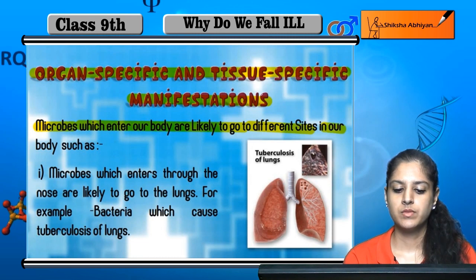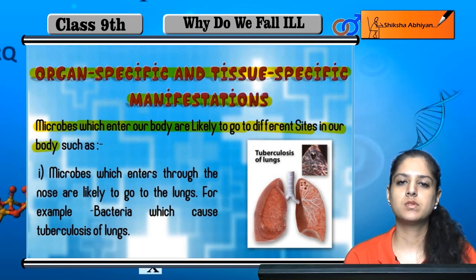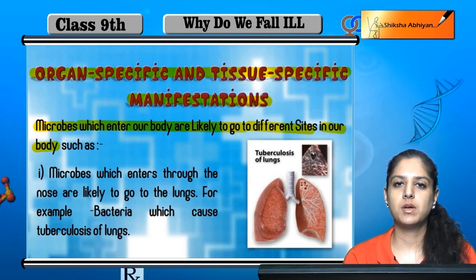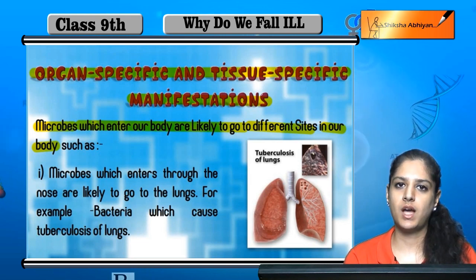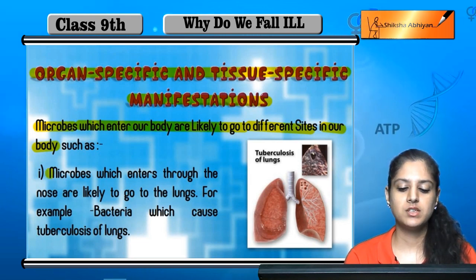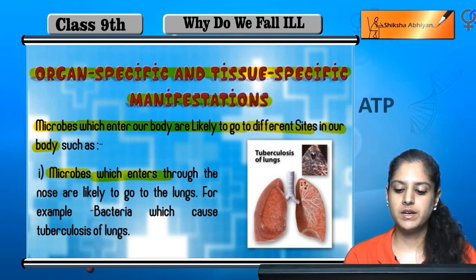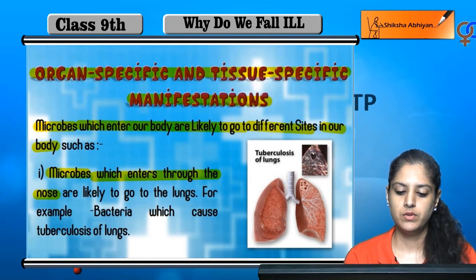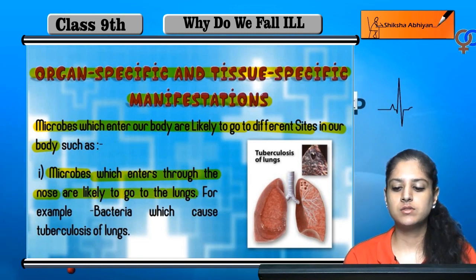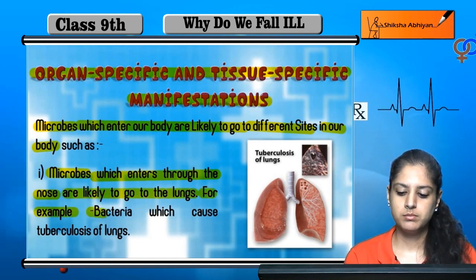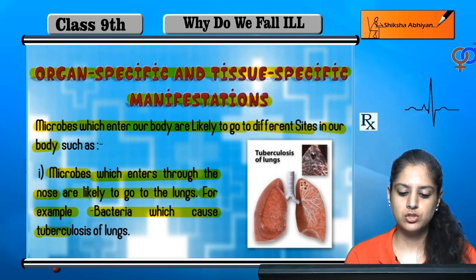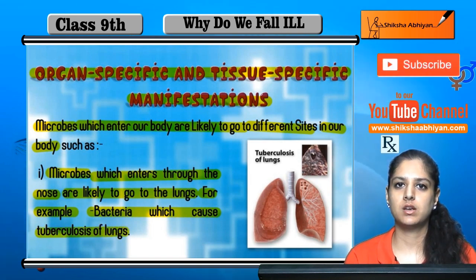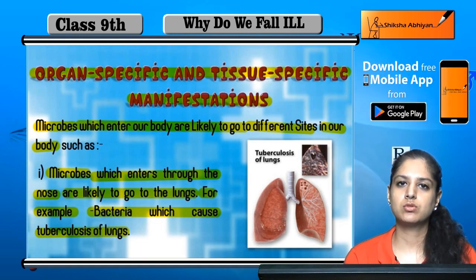Microbes enter our body and act in different places. For example, microbes which enter through our nose generally go towards the lungs — such as the bacteria which causes tuberculosis of the lungs. That bacteria is inhaled through the nose and goes into the lungs, causing damage there.